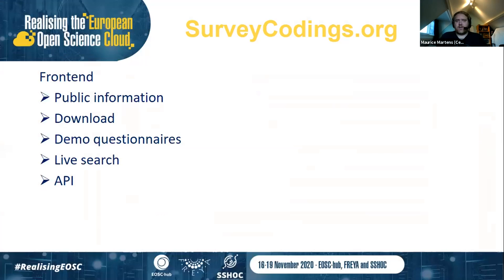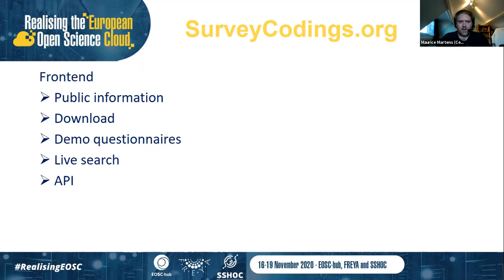The other part of SurveyCodings is what everybody can see from the world — the website surveycodings.org, the frontend. It contains public information, you can download sets, there are demo questionnaires, and for each provided set there's a live search. It's also the gateway to an API that you can use to run with the things we've defined.